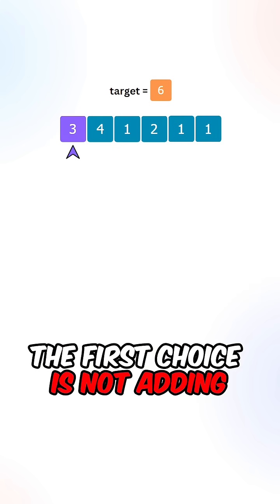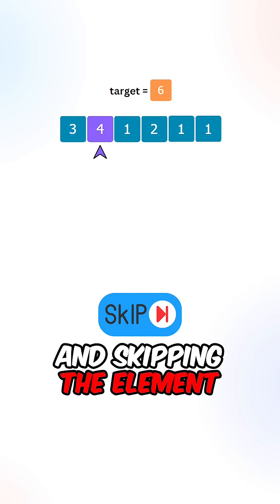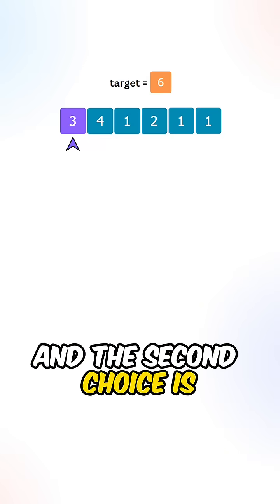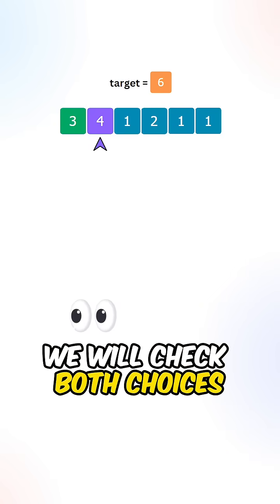The first choice is not adding the element to our subset and skipping the element. And the second choice is adding the element to our subset. We will check both choices.